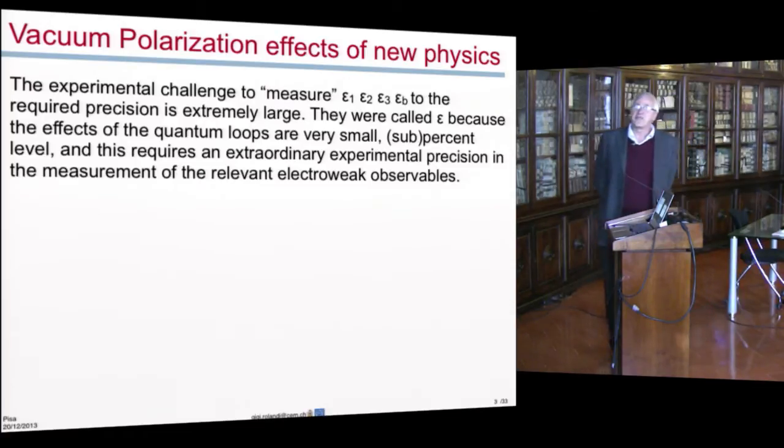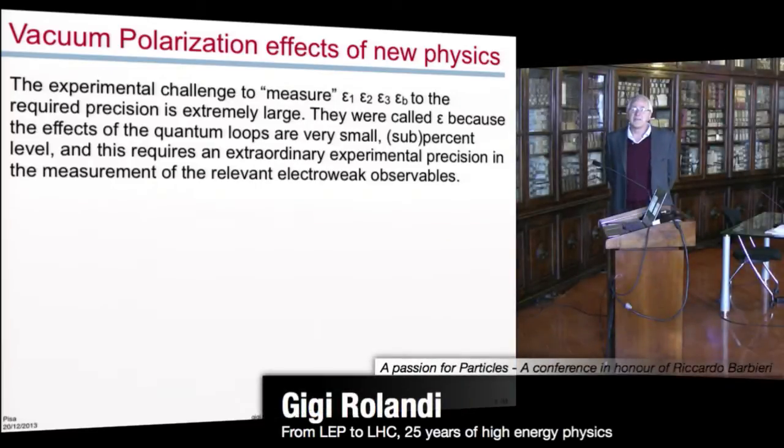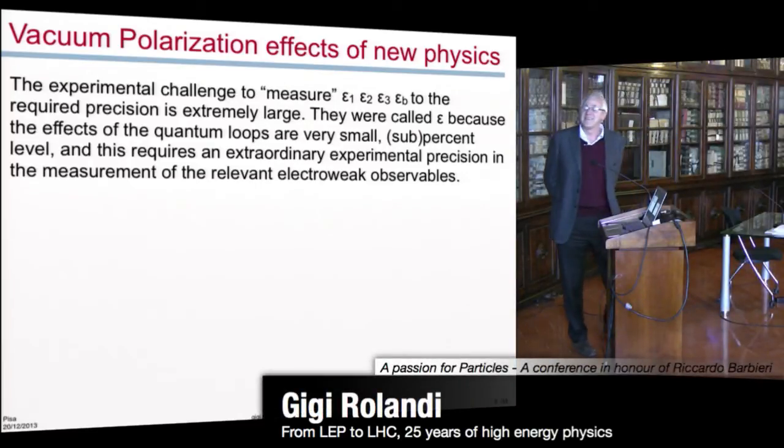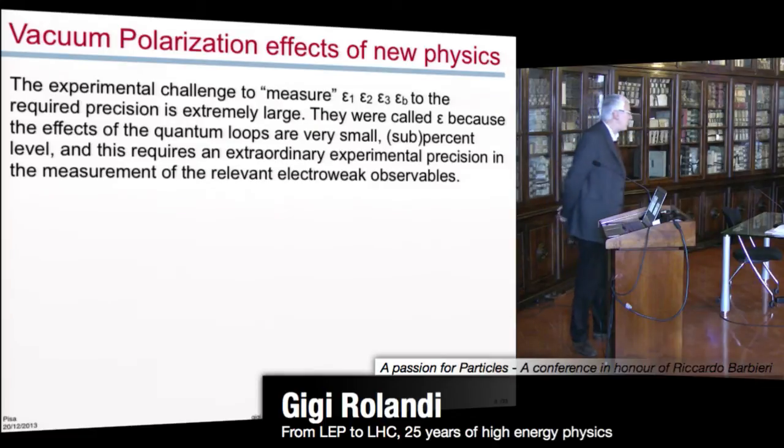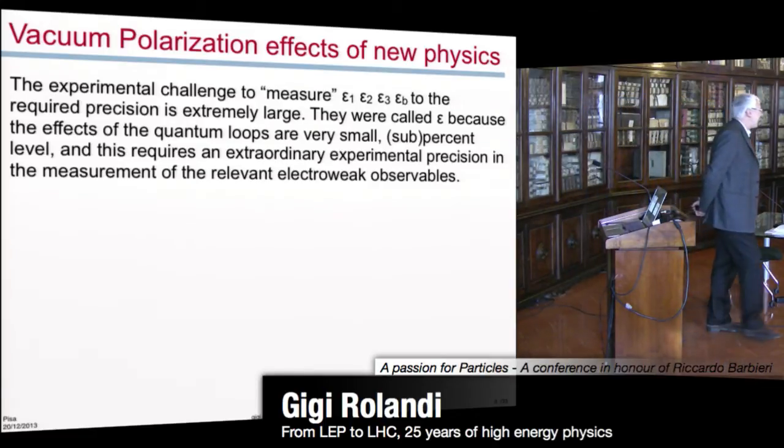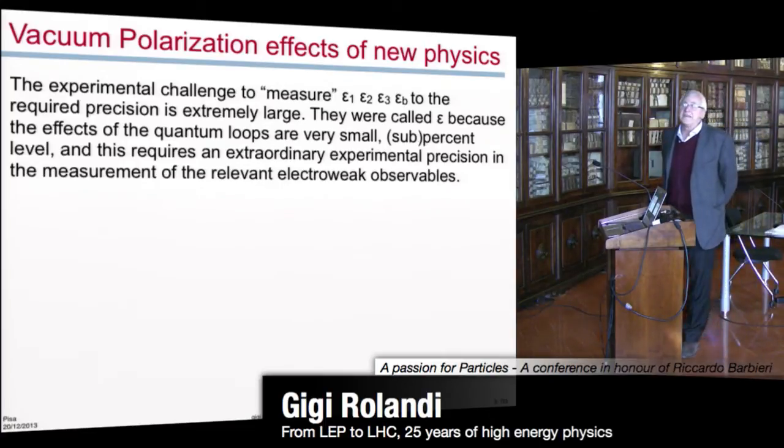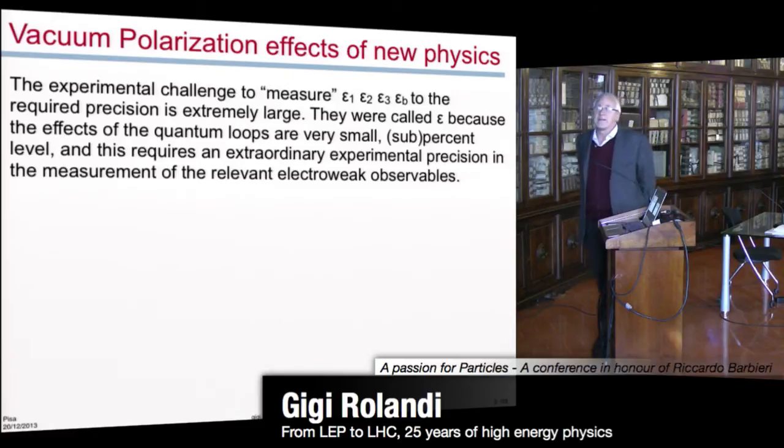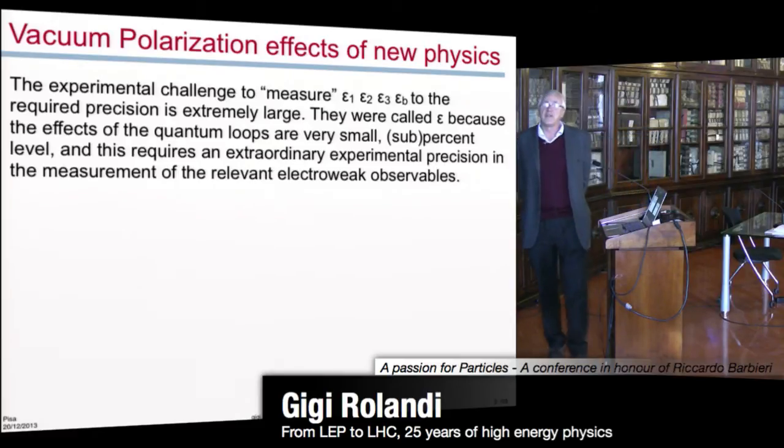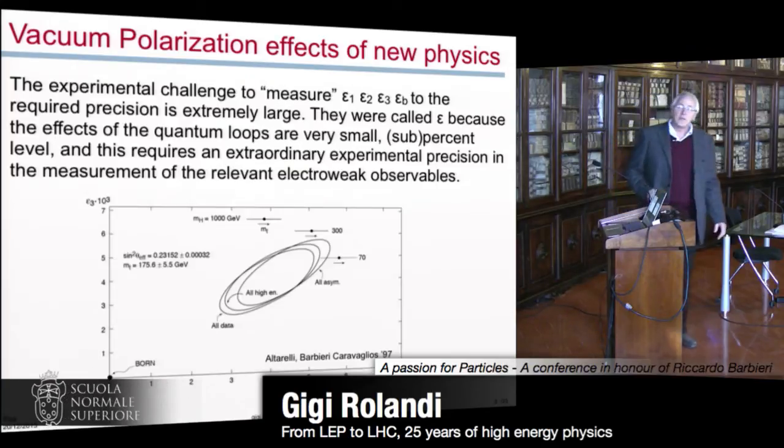The experimental challenge to measure epsilon 1, epsilon 2, epsilon 3, and epsilon b to the required precision is extremely large. They were called epsilon by Guido and Riccardo because they are small. In Italy, epsilon is a very small number by definition. And they are sub-percent. This requires an extraordinary experimental precision in the measurement of the relevant electroweak observables. And we made it.